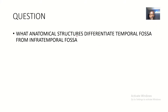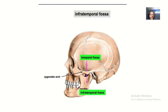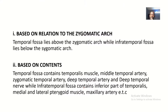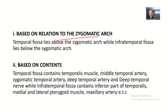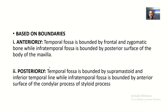The question is: what anatomical structures differentiate temporal fossa from infratemporal fossa? This is the temporal fossa and this is the infratemporal fossa. Based on relation to the zygomatic arch — the temporal fossa lies above the zygomatic arch, while the infratemporal fossa lies below the zygomatic arch.